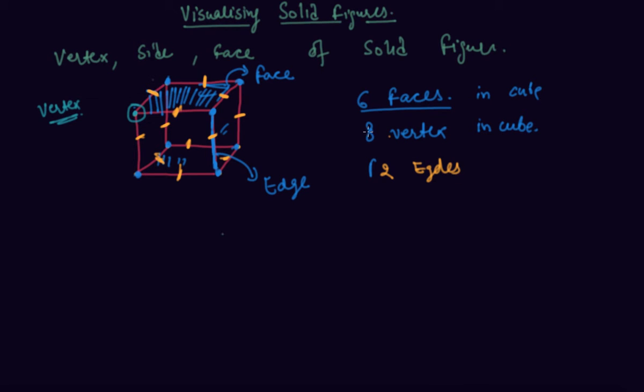So vertex, edge and face. There are 12 edges in a cube students. So I hope you are pretty clear about what is the vertex, what is an edge and what is the face of a solid figure.